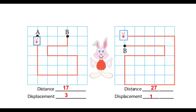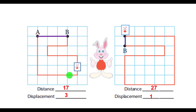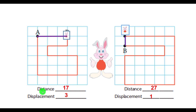The path in which a rabbit ran is shown in the figure. Each square represents 1 square meter. The rabbit starts from point A and reaches point B. Let us travel with the rabbit and count the squares. Counting along the rabbit's path from A to B, there are 17 squares. So the rabbit travels a distance of 17 square meters from point A to point B — that is denoted as distance.